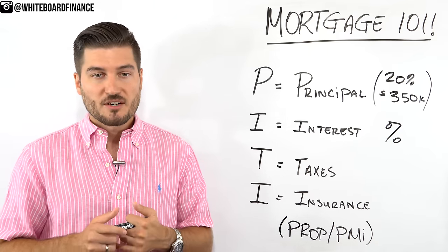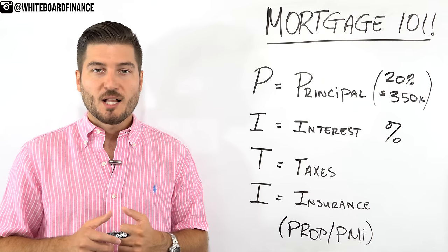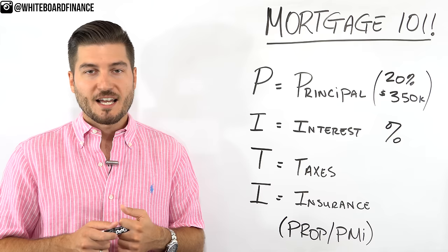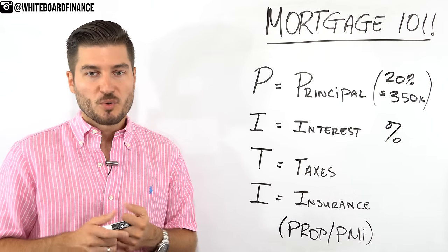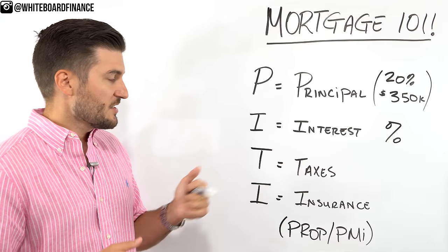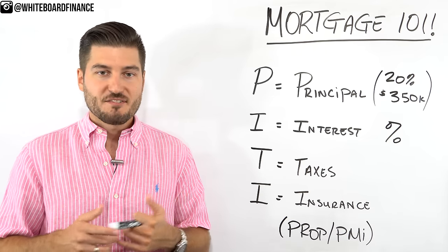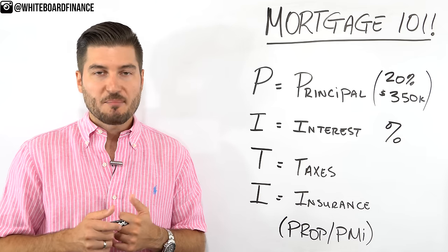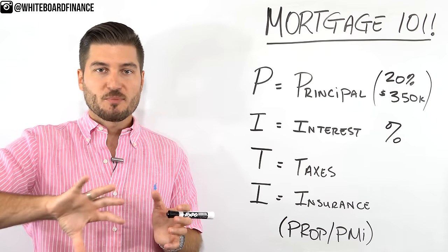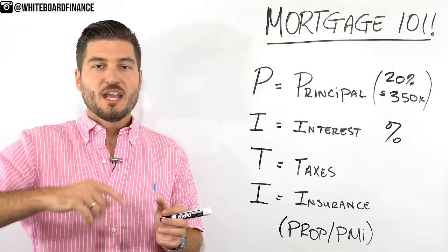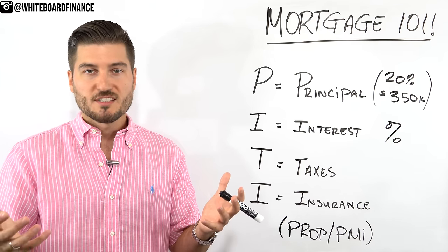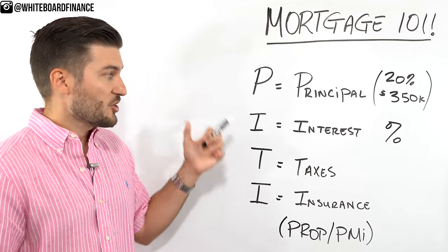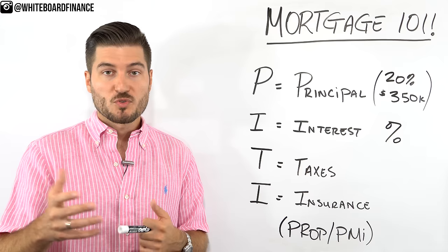T is for Taxes — this is a no-brainer. Property taxes are used to help fund schools, infrastructure, government workers, and things like that. These taxes are typically calculated on the assessed value of the home, and the lender can actually roll these into your mortgage payment. They're going to be escrowed — set aside in a special account — and once they're due, typically twice a year, that's going to be paid to the municipality they're owed to.